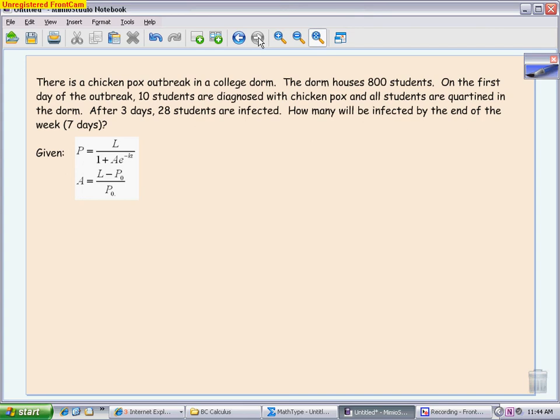So here's a problem where we're talking about a disease spreading. We mentioned in class the main situations where you have logistic growth is when you're having a population growth, where it is capped at a certain amount that the population can handle, when you have an outbreak of a disease that is spreading, or when you have a rumor spreading. All of these things cannot grow indefinitely. We have some sort of cap. So here's a disease spreading one, a real uplifting problem to look at here. We have a chickenpox outbreak. The dorm houses 800 students. That 800 is very important. That is your L. That is your carrying capacity because we can't get more people sick than that are actually there. On the first day of the outbreak, we have 10 students initially diagnosed. That is going to be our P0, our initial population with the disease. And all the students get quarantined in the dorm, meaning it cannot spread outside of this. We have 800 is our maximum people that could ever be infected. After three days, 28 students are infected. We want to figure out how many are going to be infected by the end of the week, which is going to be the full seven days.